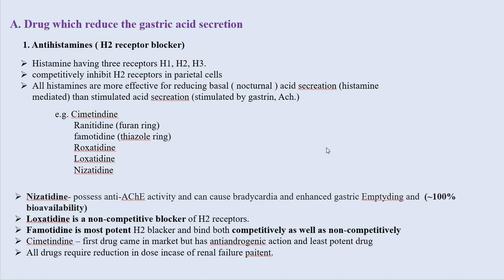The first class is antihistaminics, also known as H2 blockers. Histamine has three receptors: H1, H2, and H3. All antihistaminics competitively inhibit H2 receptors in parietal cells. They are most effective for reducing basal and nocturnal acid secretion stimulated by histamine, as well as acid secretion stimulated by gastrin and ACh. Drugs in this category include cimetidine, ranitidine, famotidine, roxatidine, loxatidine, and nizatidine. Ranitidine contains a furan ring; famotidine contains a thiazole ring. Nizatidine possesses anticholinergic activity, causing bradycardia and enhancing gastric emptying, and is the only H2 blocker with 100% bioavailability.